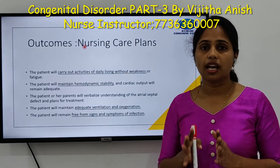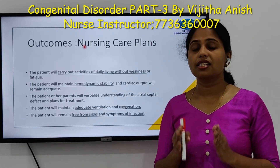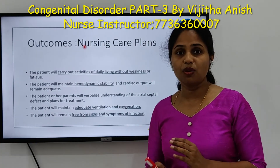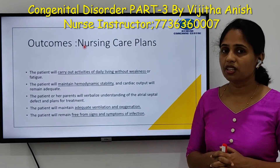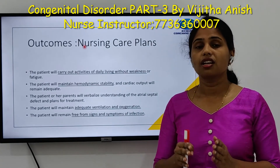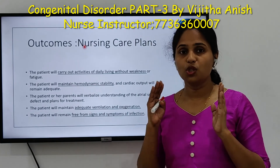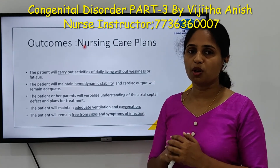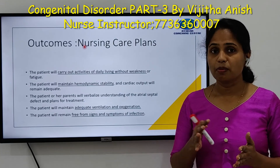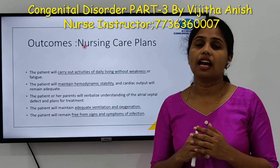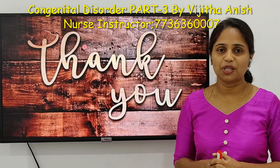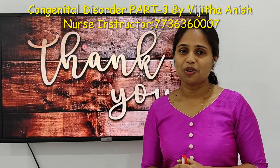In summary, ASD is atrial septal defect. It is an acyanotic disorder in which a hole is found between the two atria, the upper chambers of the heart. Oxygenated blood gets mixed with deoxygenated blood, so there is no cyanosis. It can be treated with medications and surgery. Surgery is based on the position of the ASD and the size of the ASD. Thank you for watching, and please subscribe to our channel for further videos.